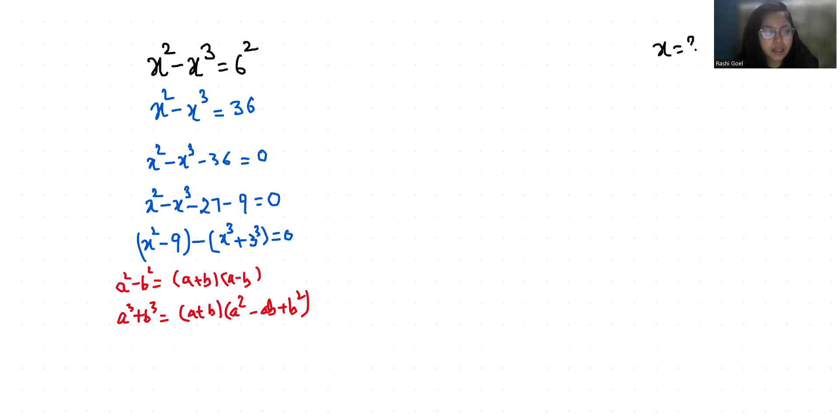So it becomes x plus 3 times x minus 3 minus x plus 3 times x squared minus 3x plus 9 equals 0.